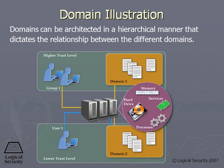Somebody with a higher trust level — a user with a higher trust level — can usually access more than one domain or more resources. The more you're trusted as an individual, the higher your role's privileges, and you can access more resources and more domains than somebody who is less trusted and maybe just a standard user.